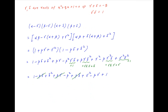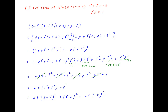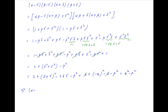Note that +p·delta cancels with -p·delta, and +p·gamma cancels with -p·gamma. Therefore, this expression equals 2 + delta² + gamma² minus p², which can be written as 2 + (delta + gamma)² minus 2·delta·gamma minus p². Substituting the values delta + gamma = -q and delta·gamma = 1, this equals 2 + q² minus 2 minus p². The 2's cancel, and the expression simplifies to q² minus p². Therefore, to summarize, (alpha minus gamma)(beta minus gamma)(alpha plus delta)(beta plus delta) = q² minus p², which is the desired result.